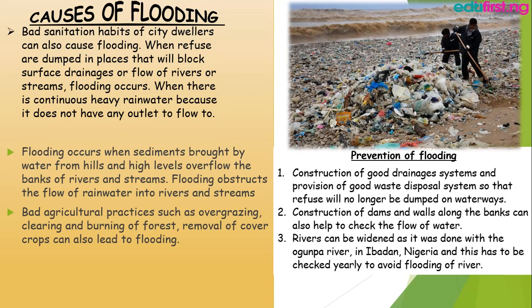Prevention of flooding: flooding can be prevented by construction of good drainages, both surface and subsurface. It can also be prevented by construction of dams and walls along the riverbank. Thirdly, rivers can be widened — for example, as was done in Ibadan. These are preventive measures we can take to prevent flooding.